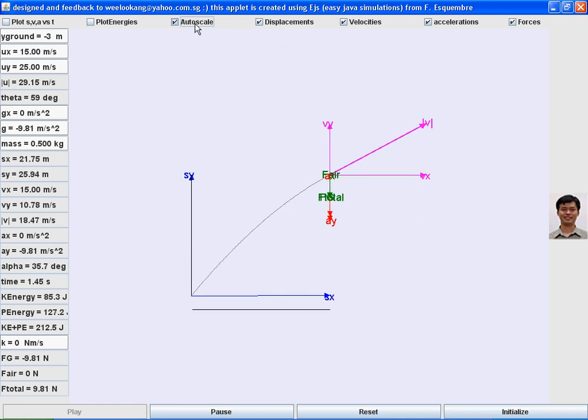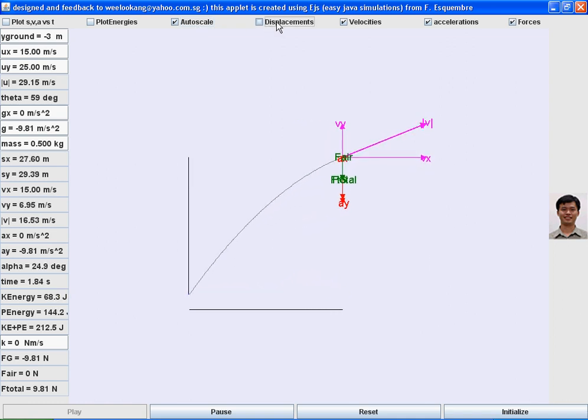Click on the run play button and then click on the autoscale. Uncheck all these buttons if you do not want to see all these vectors. Click on autoscale again if you want to stop the autoscaling.